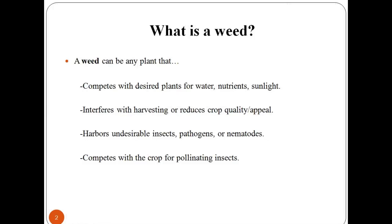Let us begin with the meaning of weed. What is weed? A weed is a plant considered undesirable in a particular situation, such as a plant in the wrong place. Many plants that people widely regard as weeds are also intentionally grown in gardens and other cultivated settings. Thus, a weed can be any plant that competes with the desired plant for water, nutrients, and sunlight, and which interferes with the harvesting or reduces crop quality.